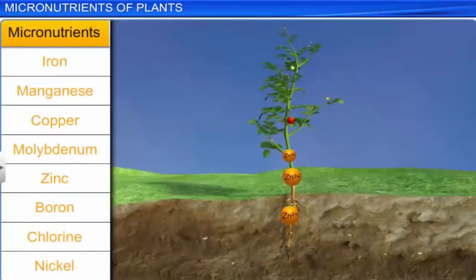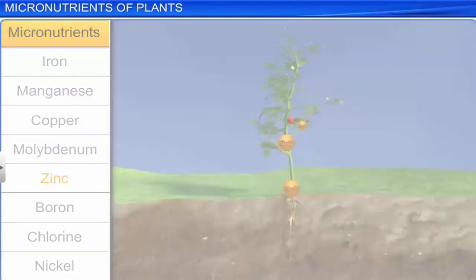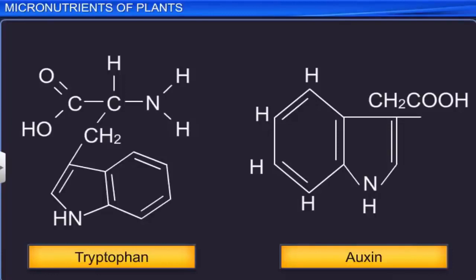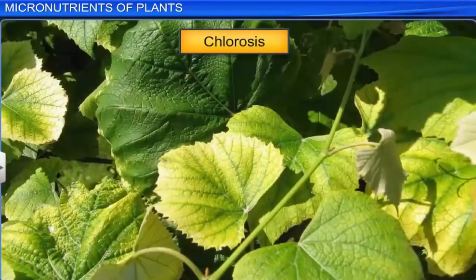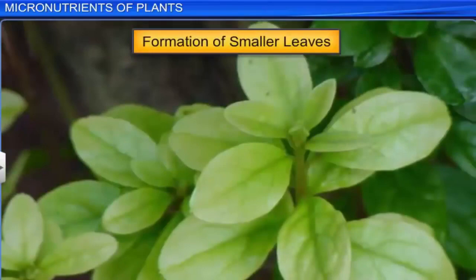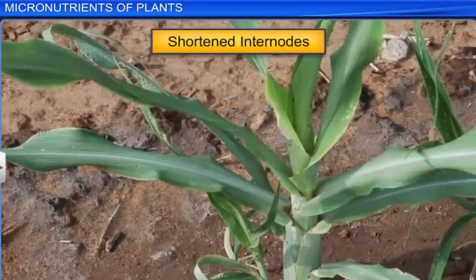Plants obtain the micronutrient zinc as Zn2+ ions. It activates enzymes such as carboxylases, part of carbonic anhydrase, and dehydrogenases. It takes part in the formation of tryptophan, a precursor for the plant growth hormone auxin. Deficiency symptoms include chlorosis, formation of smaller leaves, and shortened internodes.